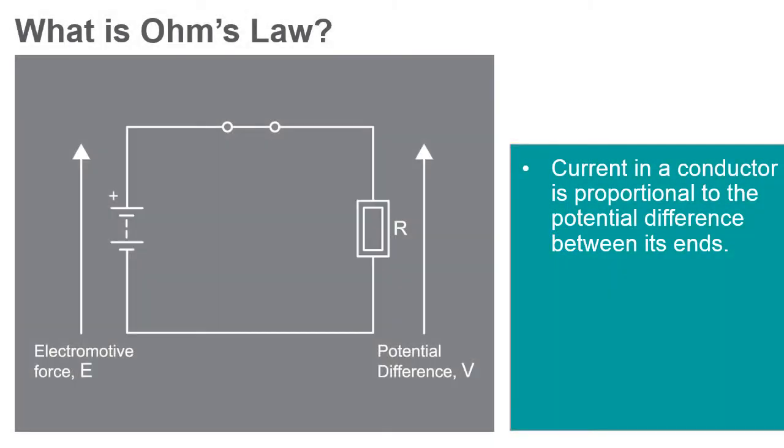Ohm's Law states that the direct current flowing in a conductor is directly proportional to the potential difference between its ends.